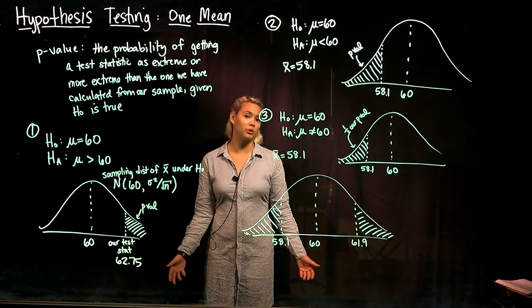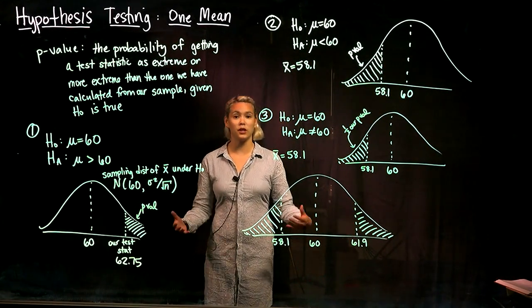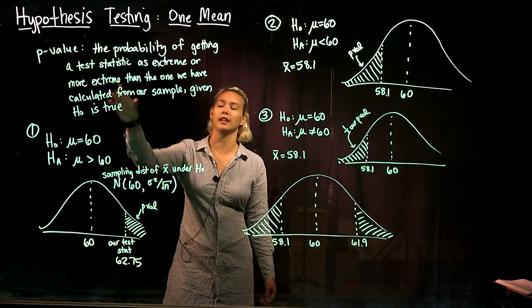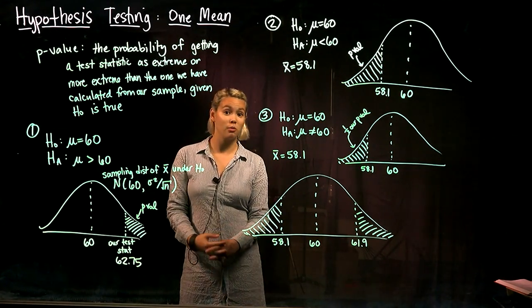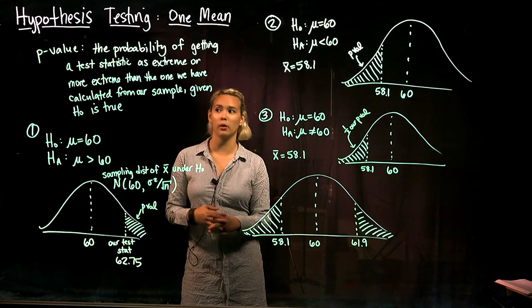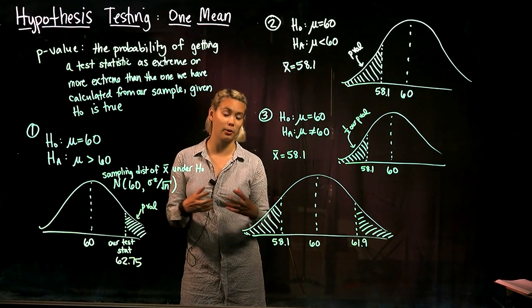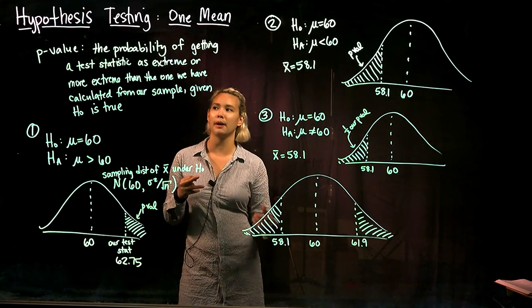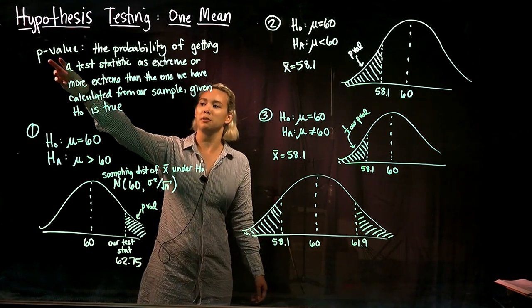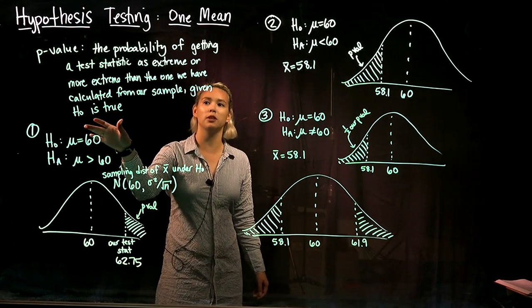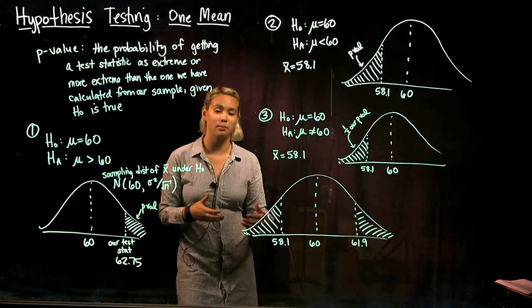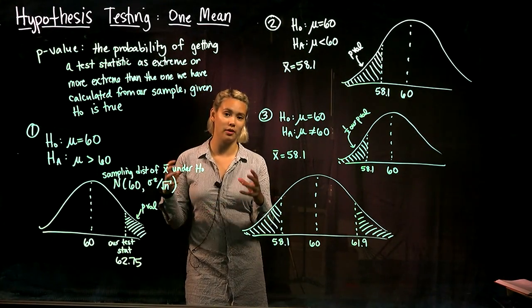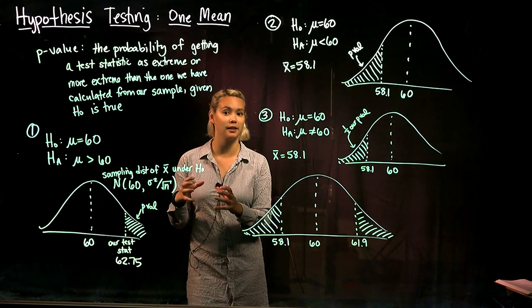Let's talk a little bit more about p-values. In the last video, we defined p-value. We said that the p-value is the probability of getting a test statistic as extreme or more extreme than the one that we have calculated based on our sample, given that the null hypothesis is true. The p-value is saying: assume the null hypothesis is true — what's the probability of getting a test statistic as extreme or more extreme than the one we got based on our sample data?